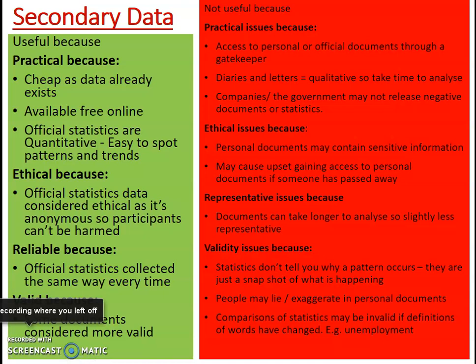Regarding ethical issues, personal documents may contain sensitive information. If you're conducting research on personal or historical documents of people who have passed away, they haven't given direct permission to access those materials. Gaining access to personal documents of someone who passed away — perhaps due to a crime — can upset family members. Personal documents can also include Facebook profiles, Instagram profiles, messages, and emails, which adds an ethical dimension.